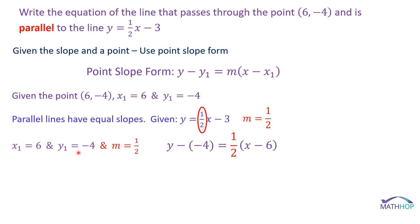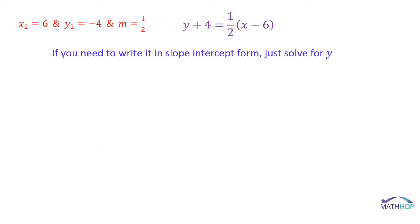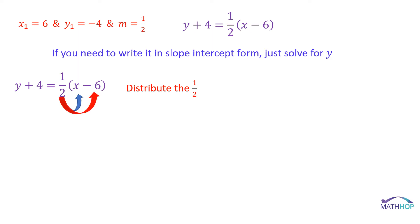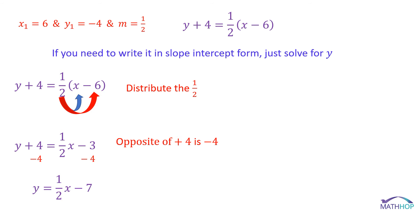We have y minus negative 4 equals 1/2 times the quantity x minus 6. Let's not leave a double negative — y minus negative 4 is y plus 4 — so we get y plus 4 equals 1/2 times the quantity x minus 6. If you need to write it in slope-intercept form, distribute the slope: 1/2 times x is 1/2x, and 1/2 times negative 6 is negative 3. We get y plus 4 equals 1/2x minus 3. Subtract 4 from both sides and we get y equals 1/2x minus 7.